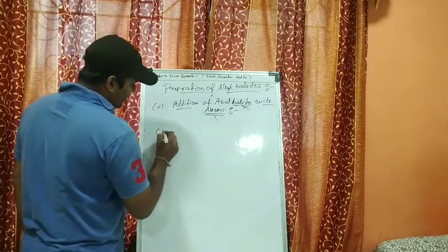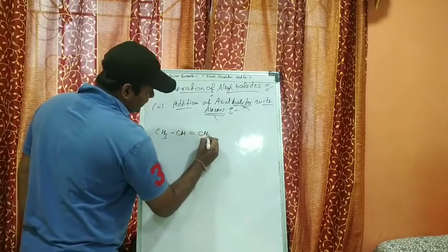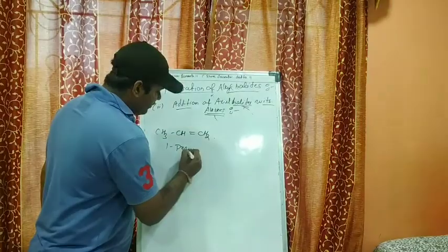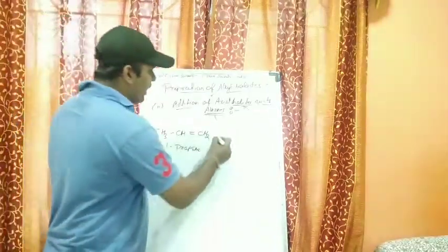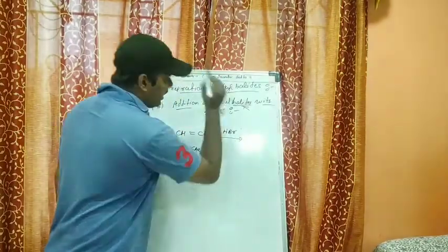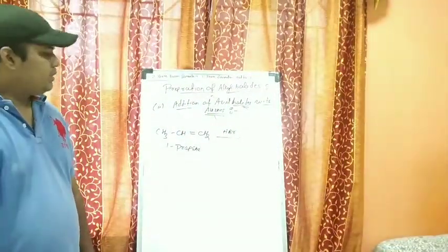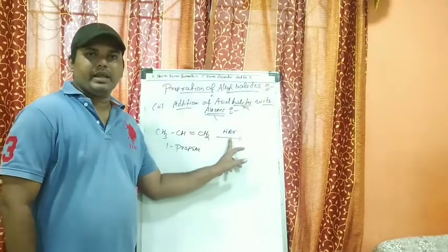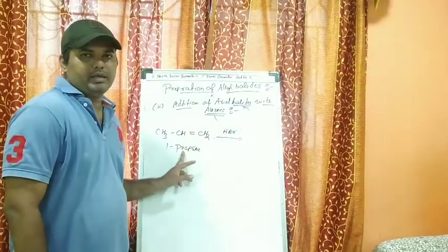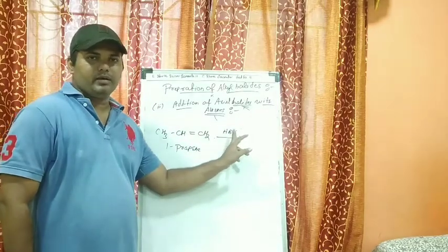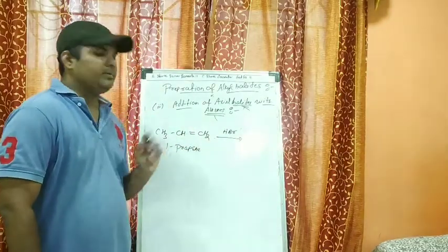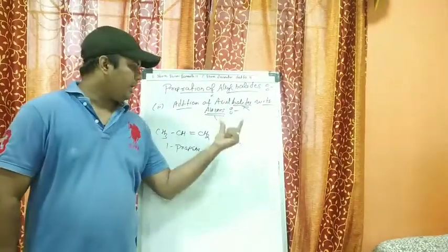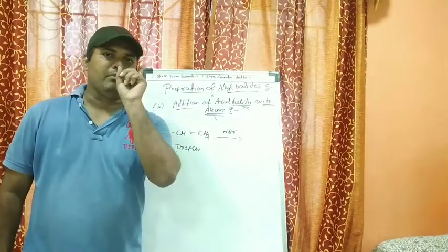Let's take the example of 1-propene: CH₃CH=CH₂. To this we add HBr. Always remember that when an unsymmetrical reagent is added to an unsymmetrical alkene, the negative part of the reagent will get added to the carbon containing the fewer hydrogen atoms. This is known as Markovnikov's rule.